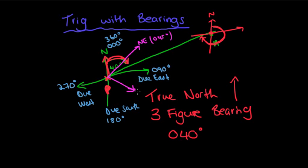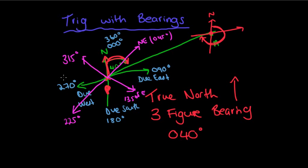Likewise, southeast: adding 45 onto the 90 gives 135 degrees. Southwest: add 45 onto 180, which gives 225 degrees. Northwest: adding 45 gives 315 degrees. So that's a quick introduction to bearings. The main important fact is always start at north and then turn clockwise. You can turn anti-clockwise if you wish, but then you start from 360 degrees.